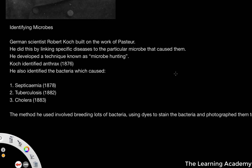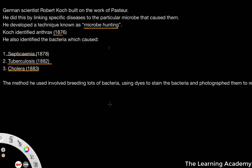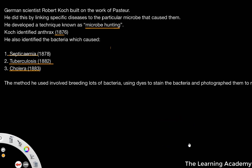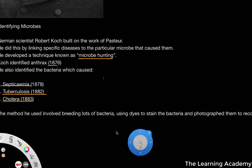The German scientist Robert Koch built upon the work of Pasteur by linking specific diseases to particular microbes, which was very interesting. He developed a technique known as microbe hunting, and almost a microbe hunting revolution began in Europe at the time. Koch identified anthrax in 1876, the bacteria which caused septicemia in 1878, tuberculosis in 1882, and cholera in 1883. The method he used involved breeding lots of bacteria and using dyes to stain the bacteria and photograph them to record the findings.